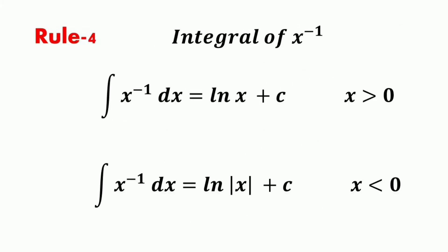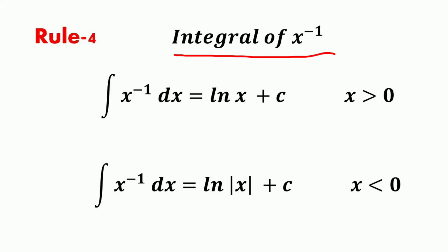The power rule of integration will not work when the exponent is minus 1. The above formula cannot be used to evaluate integrals in which the power is minus 1 — the power rule does not work. In that case, the anti-derivative of x to the negative 1 power is the natural logarithm, that is ln x plus c, when x is greater than or equal to 0. The natural log function is defined only for positive values — its domain contains only positive values.